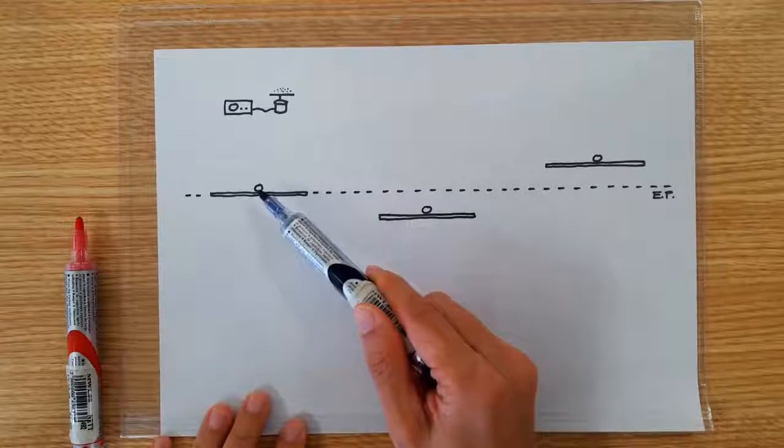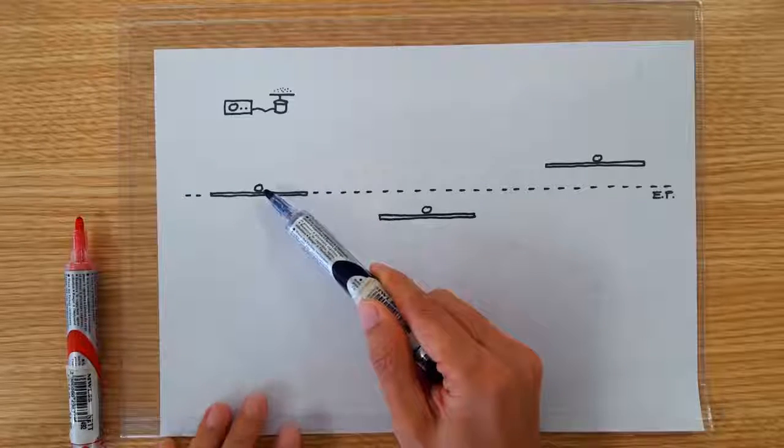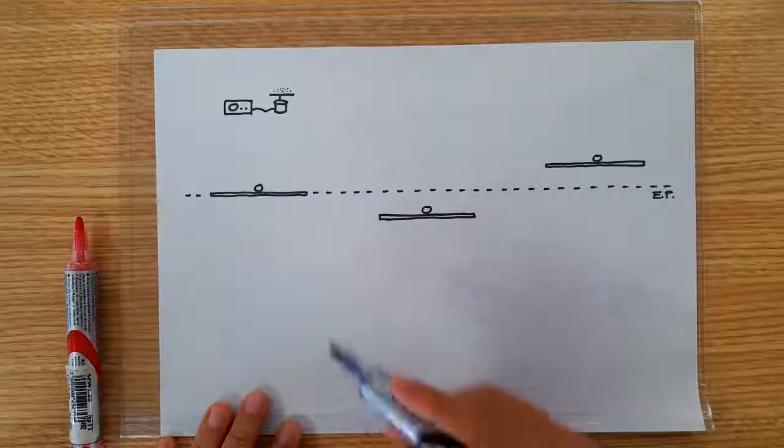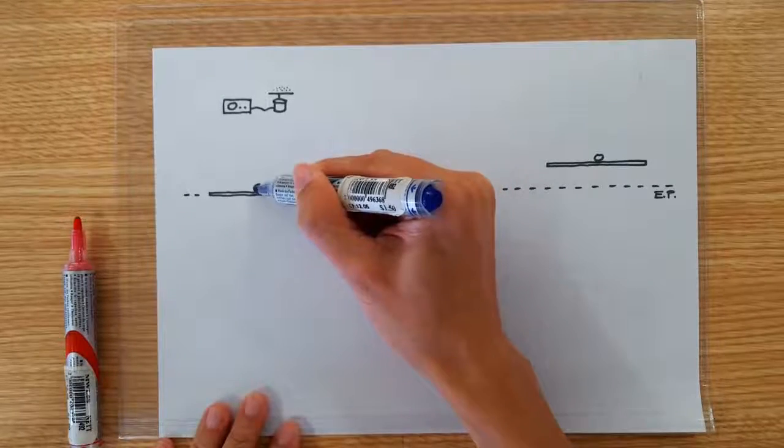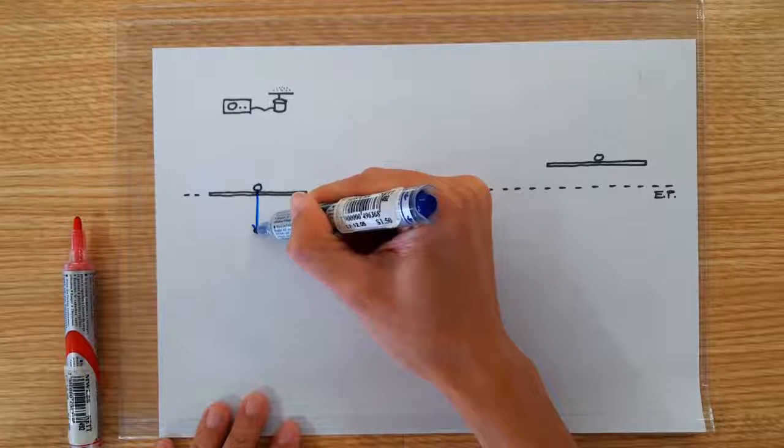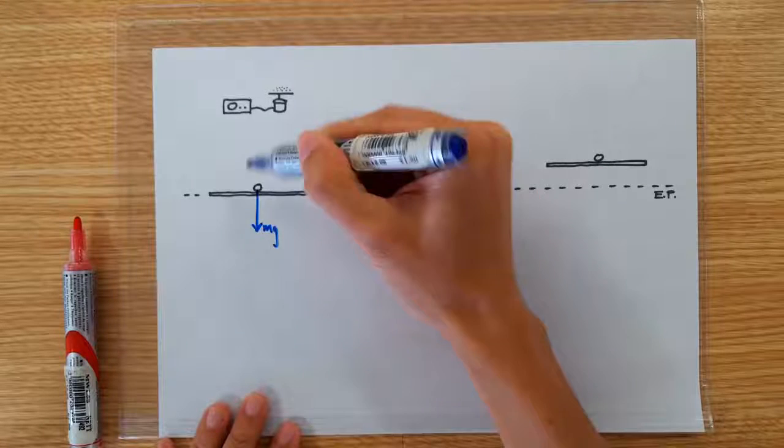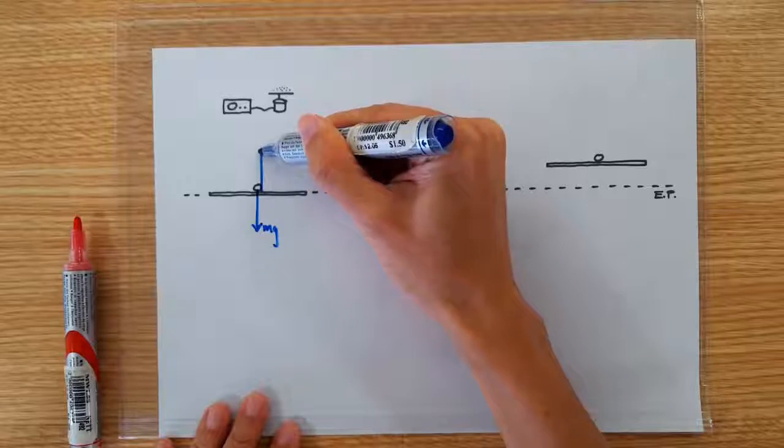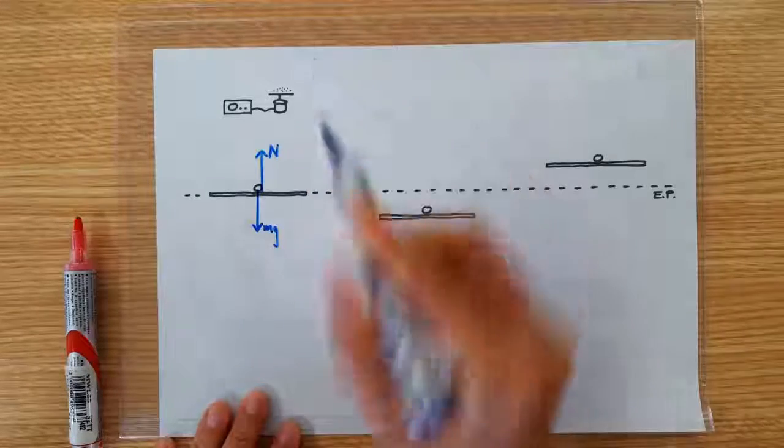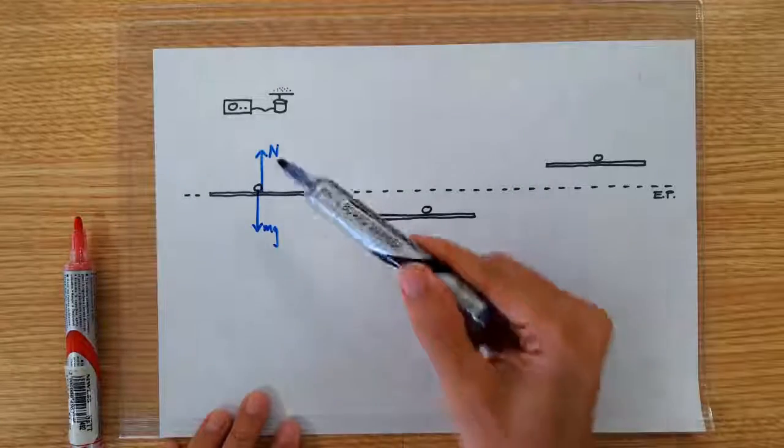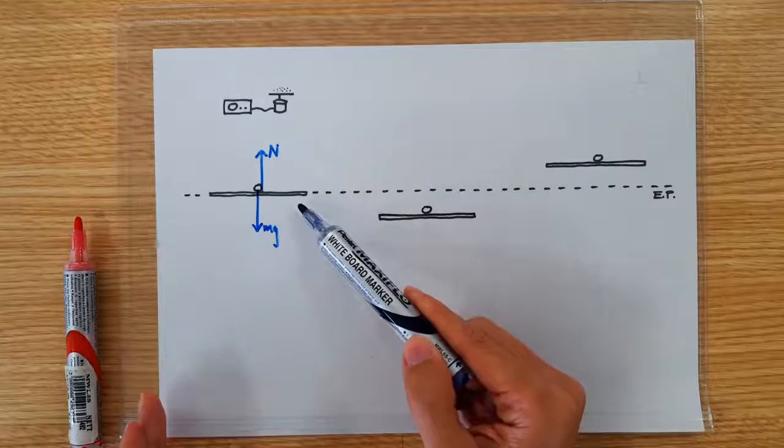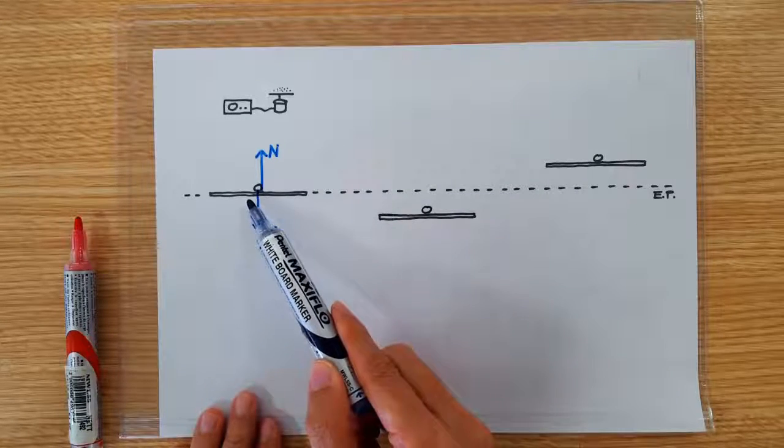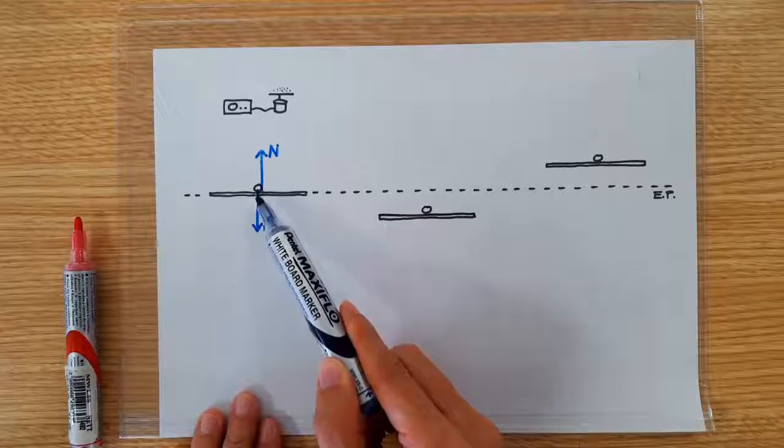The free body diagram of a sand particle can make the situation clearer. So there are only two forces acting on a sand particle. There is its weight and there is the normal contact force. At the equilibrium position, these two forces should be equal in magnitude because for SHM, at the equilibrium position, the net force is zero.